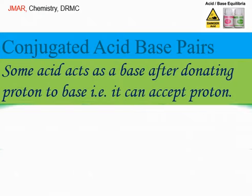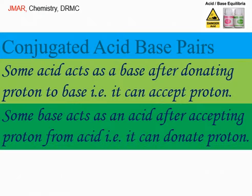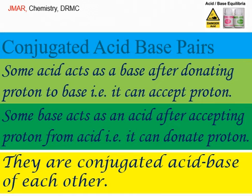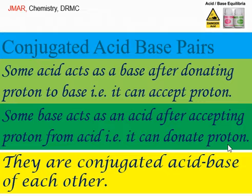Now, conjugate acid-base pairs. Some acids act as a base after donating a proton — that is, they can accept a proton. Some bases, on the other hand, act as an acid after accepting a proton from an acid — that is, they can donate a proton again. They are conjugate acid-base pairs of each other.